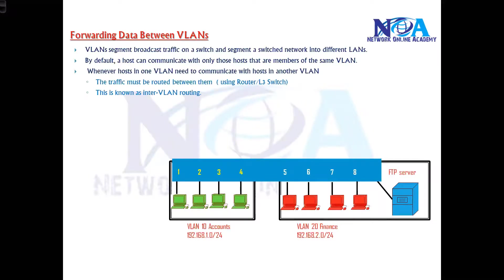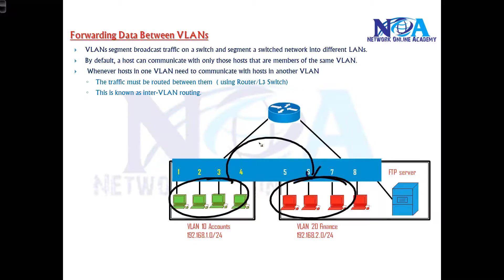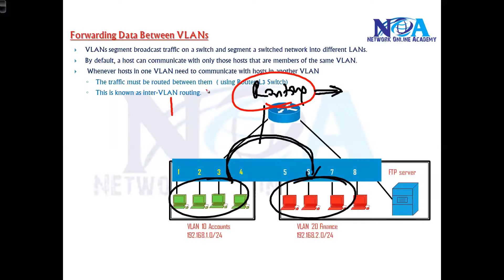Inter-VLAN routing means we need to have a router. With the help of that router we forward packets from one network to another network. This method of forwarding packets from one network to another network we call routing. We will see more routing concepts in a separate section, but in our case here we are doing inter-VLAN routing, or simply VLAN routing.